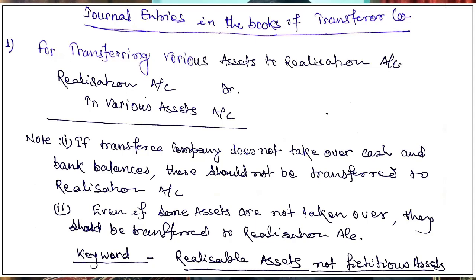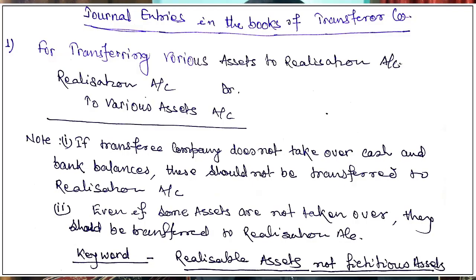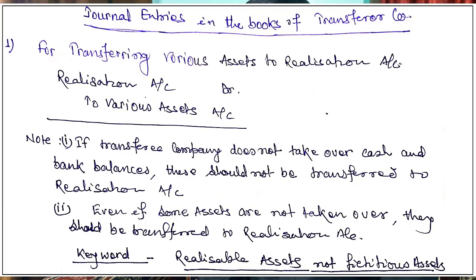Two important notes here. Note one: if the transferee company does not take over cash or bank balances, these should not be transferred to Realization Account — open a separate account for them. Note two: even if some assets are not taken over, they should still be transferred to Realization Account. The keyword is realizable assets, not fictitious assets. Fictitious assets include preliminary expenses, underwriting commission, debit balance of P&L account, and discount on shares — these should not be transferred to Realization Account. All tangible and intangible assets go to Realization Account.